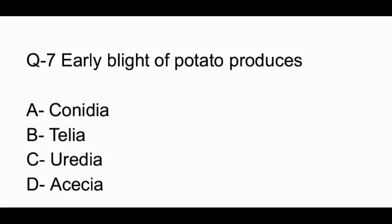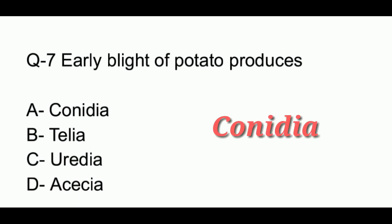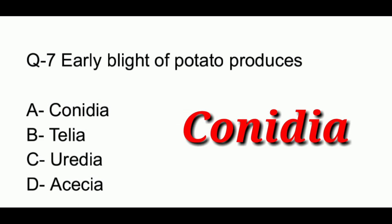Question number 7. Early blight of potato produces: option A, conidia; option B, telia; option C, uredinia; option D, acacia. The answer to this question is option A, which is conidia.